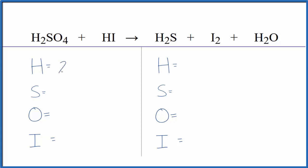We have two hydrogens here, plus we have this one here. So we have three hydrogen atoms, one sulfur, four oxygens, and one iodine.